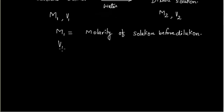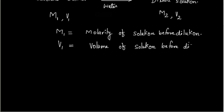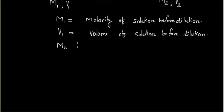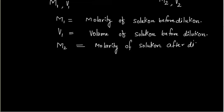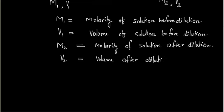V1 is the volume of the solution before dilution. M2 is the molarity of the solution after dilution. And V2 is the volume of the solution after dilution.